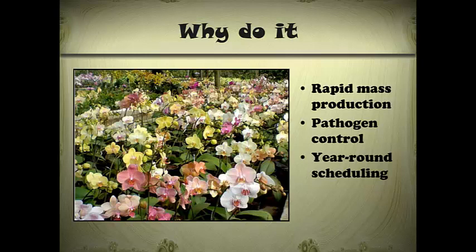Tissue culture can also be used for pathogen control. Because you're growing sterile plant pieces in a sterile environment, this allows us to grow essentially disease-free plants. You can even grow virus-free plants using tissue culture, and this is what they do for crops that have a lot of virus problems, such as strawberries. What is used commercially are virus-free plants that growers buy fresh each year. They take a meristem — an actively growing and dividing part from the strawberry plant — place it in tissue culture, and grow new plants from that. Since the meristem is actively growing and dividing so quickly, it won't have caught any viruses yet, and we can get virus-free plants.